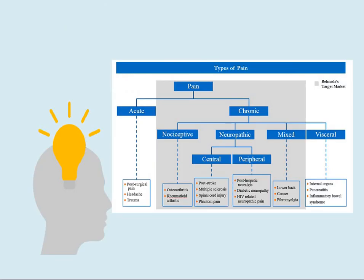Pain can be acute or chronic. Within acute pain we find post-surgical pain, headache, or trauma. In chronic pain, we encounter all four types: nociceptive, neuropathic, mixed, or visceral. Nociceptive pain is met in osteoarthritis, rheumatoid arthritis — this is chronic and persistent pain.